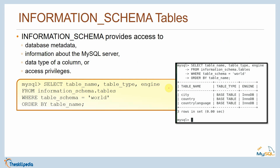The information_schema provides access to database metadata — information about the MySQL server, data types of columns, access privileges, and more. For example, running this query on MySQL 8: SELECT table_name, table_type, engine FROM information_schema.tables WHERE table_schema = 'world' ORDER BY table_name — gives you the actual table name, table type, and engine from the world database.